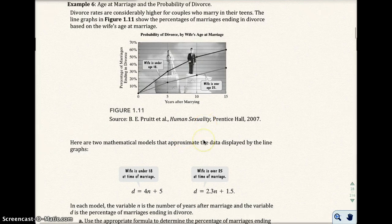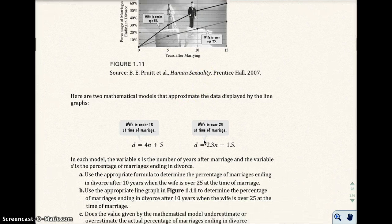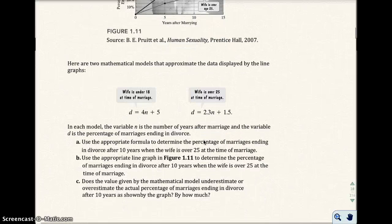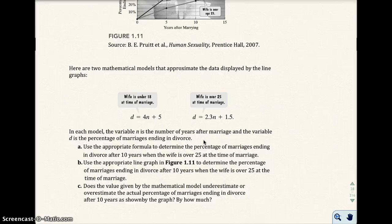There are two mathematical models that you can show down below that approximate the data displayed by the line graph. And one goes for the wife being under 18 at the time of marriage, and then the one being 25 or over at the time of marriage, or over 25. Part A asks you to use the appropriate formula to determine the percentage of marriages ending in divorce after 10 years when the wife is over 25 at the time of marriage. So if you know that the wife is over 25 at the time of marriage, you want to use this formula right here.